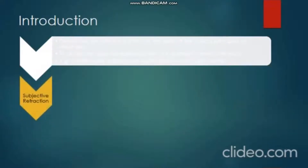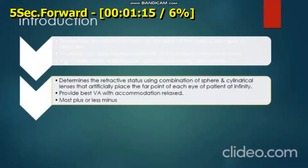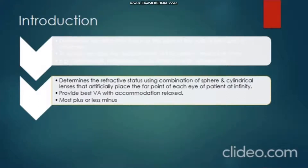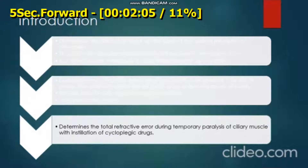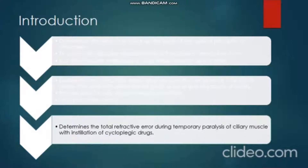Subjective refraction determines the refractive status using a combination of sphere and cylindrical lenses that artificially places the far point of each patient at infinity, with accommodation relaxed. The sphere is selected on the basis of most plus or least minus. Cycloplegic refraction determines the total refractive error during temporary paralysis of the ciliary muscle with installation of cycloplegic drugs.